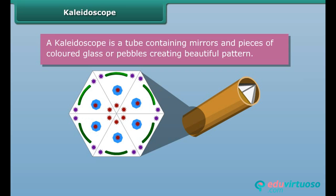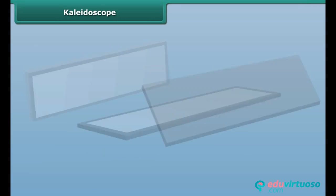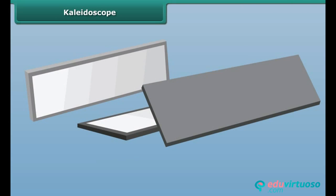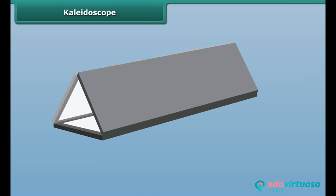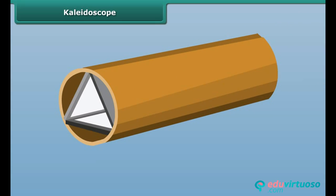Let us perform an activity to make a kaleidoscope. Get three strips of plain mirrors and join them together to form a prism. Fix them in a circular cardboard tube.